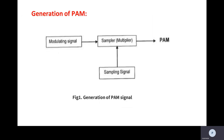If you observe the circuit diagram, you can see a modulating signal block, a sampling signal block, and a sampler which is a multiplier, with a PAM output on the output side. The modulating signal is generated from the first block and the pulsed carrier from the sampling signal block. Both waveforms are given to the sampler, which performs a multiplication operation on both signals, and at the output of the sampler we get the pulse amplitude modulated signal.